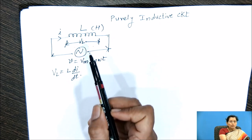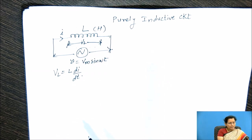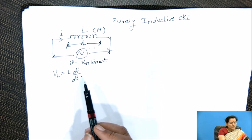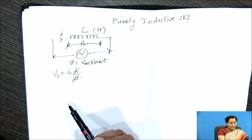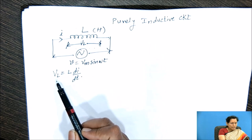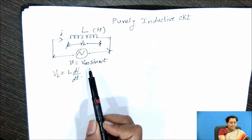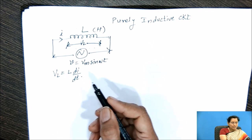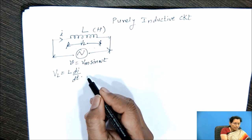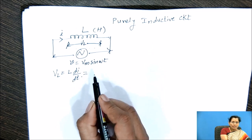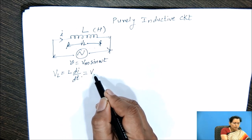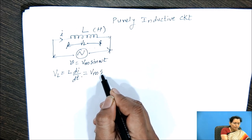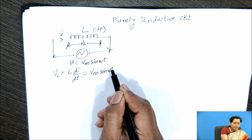Only one inductor is connected across this AC voltage V equal to Vm sin ωt. So we can equate VL as Vm sin ωt. So we can write down this equation as L dI/dT equal to Vm sin ωt.